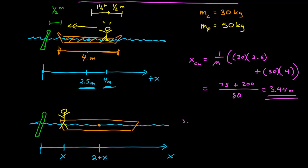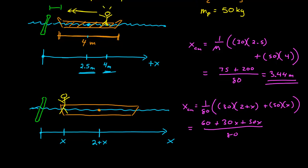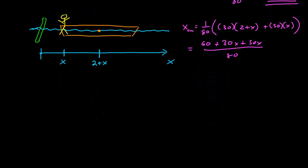So let's go ahead and calculate that. So the x of the center of mass is equal to 1 over 80, the total mass hasn't changed, but now we have the mass of the boat, which is 30 times 2 plus x plus 50 times x. So that's equal to, this is 60 plus 30x plus 50x all over 80.